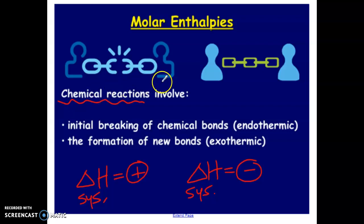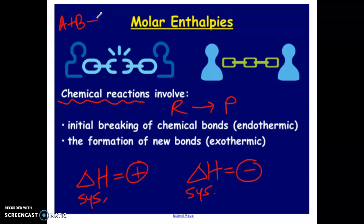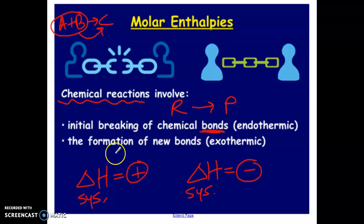Anytime you have a reaction, you have reactants becoming products — so you might have A plus B becoming C. In order for the reactants to become products, the bonds have to be broken. The bonds that are in the beginning particles must break, and energy has to actually be absorbed from the surroundings in order for that to happen. It takes energy to break a chemical bond.